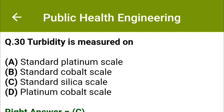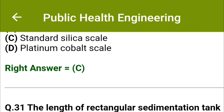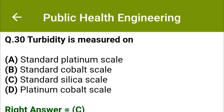Turbidity is measured on: option A: standard platinum scale, option B: standard cobalt scale, option C: standard silica scale, option D: platinum cobalt scale. The correct answer is option C: standard silica scale. Thank you.